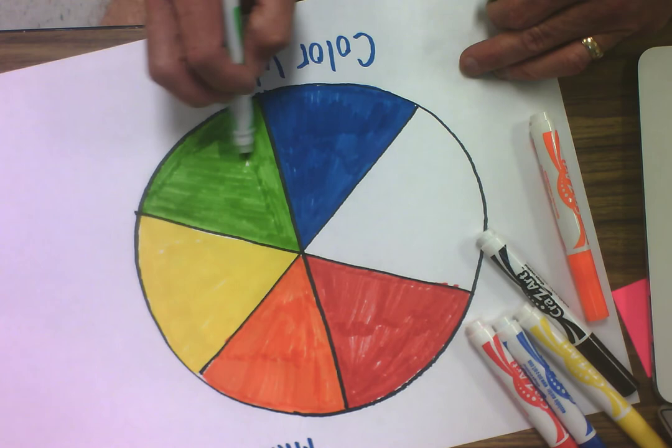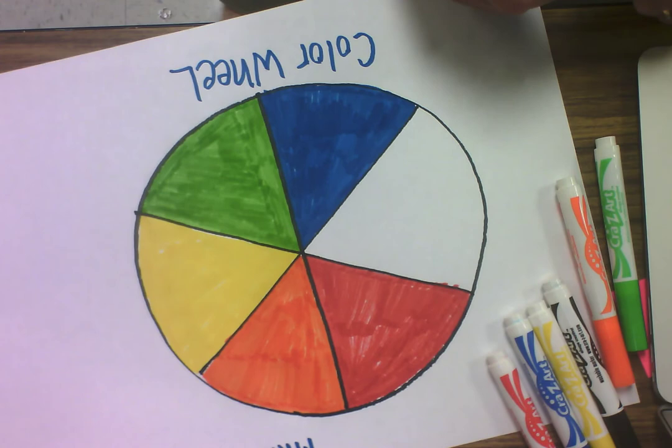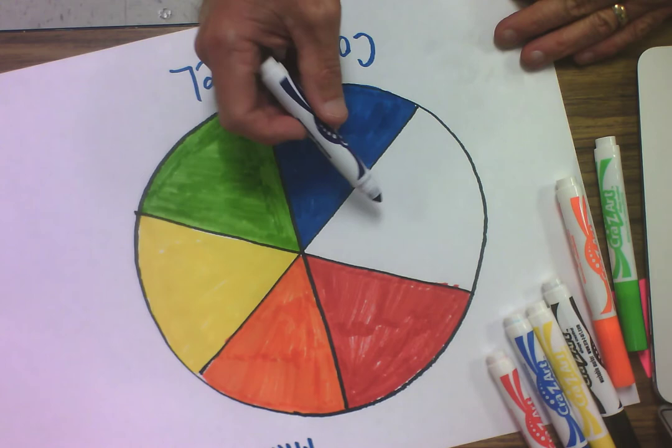So what's something that is green that would go on a pizza? Yes, peppers. I love peppers. What's something red that would go on a pizza? Yeah, salami or pepperoni. Anything blue go on a pizza? No, no way.